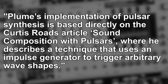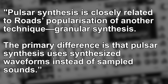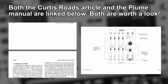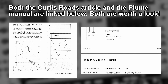Plume's implementation of Pulsar Synthesis is based directly on the Curtis Rhodes article 'Sound Composition with Pulsars' where he describes a technique that uses an impulse generator to trigger arbitrary waveforms. The impulse generator controls Plume's fundamental frequency where the wave shape frequency, called formant, modifies timbre. Crossfading, wave folding and amplitude modulation can then be applied to each wave shape. The masking stage allows for advanced stereo location and impulse train modification. Pulsar Synthesis is closely related to Rhodes' popularization of granular synthesis, but the primary difference is that Pulsar Synthesis uses synthesized waveforms instead of sampled sounds. For those into the science of sound, the Curtis Rhodes article is well worth a read and has graphics that help visualize the nature of generating and manipulating these wave shapes — that article is linked below.